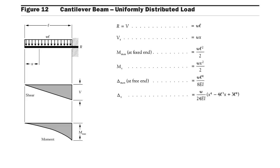In competitive examinations, questions are asked about the bending moment value, deflection value, and at which point the maximum deflection or bending moment occurs. Remember: for a cantilever beam with UDL, maximum bending moment is wl² / 2 and maximum deflection is wl⁴ / 8EI.